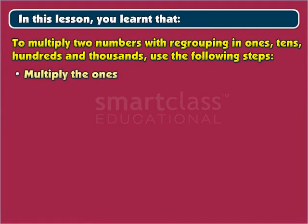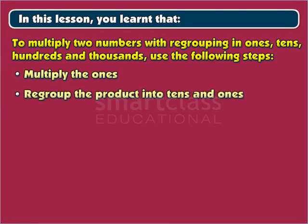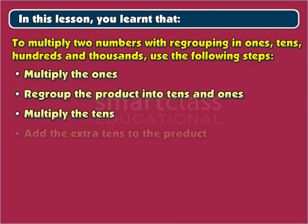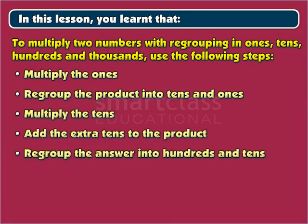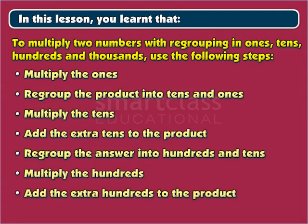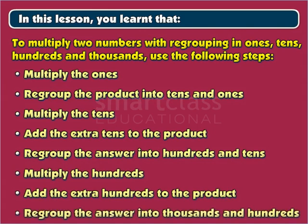Multiply the 1s. Regroup the product into 10s and 1s. Multiply the 10s. Add the extra 10s to the product. Regroup the answer into 100s and 10s. Multiply the 100s. Add the extra 100s to the product. Regroup the answer into 1000s and 100s.